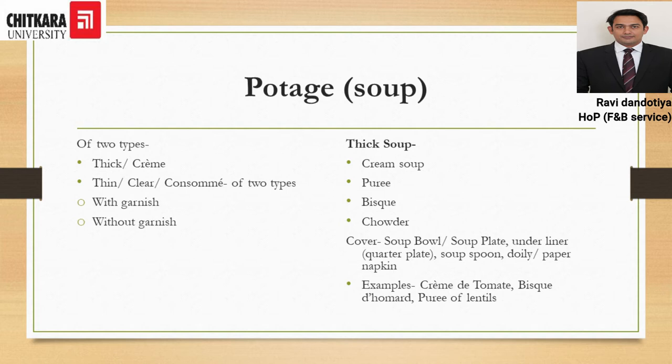First we will start with potage, the second course of the French classical menu. Potage is a French term for soup. There are two basic types of soups: thin soup and thick soup. Thin soups can be classified into two categories — those served with garnish and those served without garnish. Thick soups can be classified into cream soup, purée soup, bisque, and chowder.